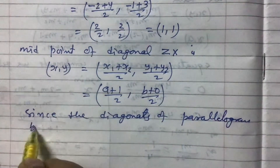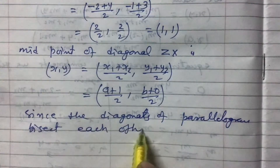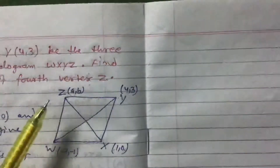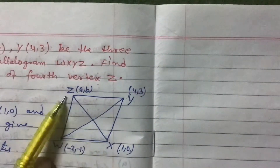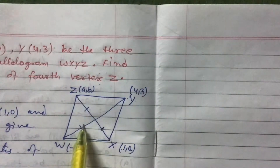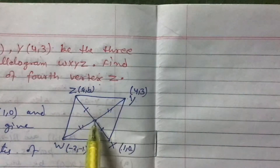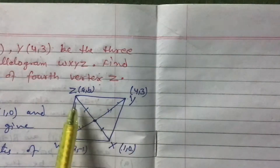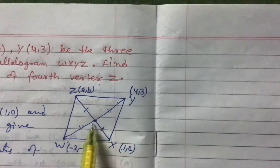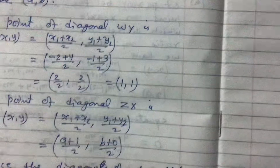Since the diagonals of a parallelogram bisect each other, diagonal ZX and diagonal WY bisect each other. This means each diagonal's midpoint is the same point. Therefore, the midpoint of WY and the midpoint of ZX should be equal.